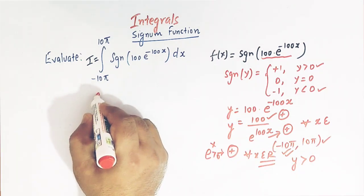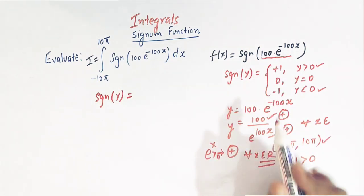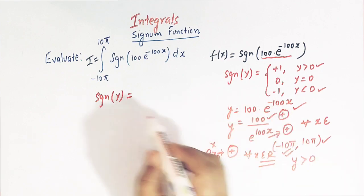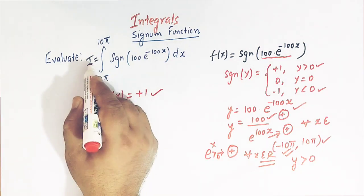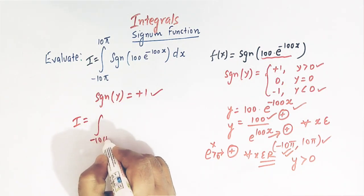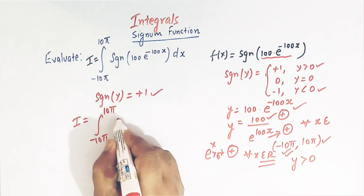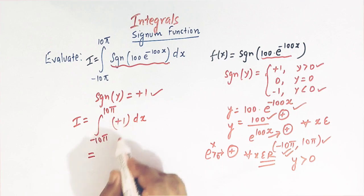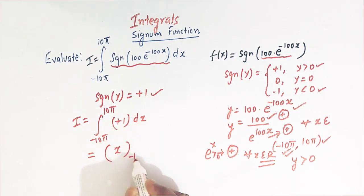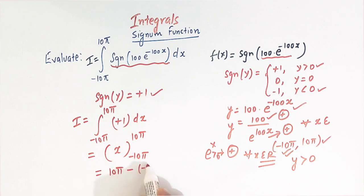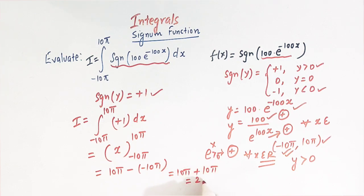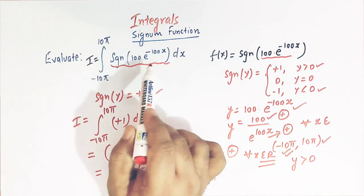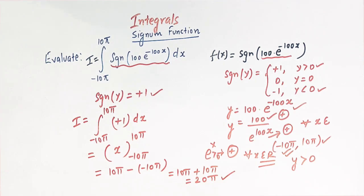Therefore, signum of y, where y is 100 times e raised to minus 100 x, takes the value plus 1. So our integral I becomes the integral from minus 10 pi to 10 pi of 1 dx. The integral of dx is simply x, evaluated from minus 10 pi to 10 pi. This gives 10 pi minus minus 10 pi, which is 10 pi plus 10 pi, equal to 20 pi. So the value of this integral is equal to 20 pi.